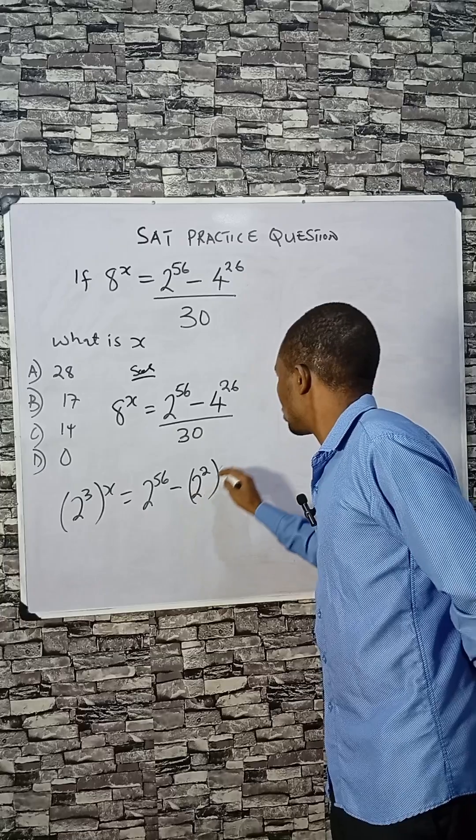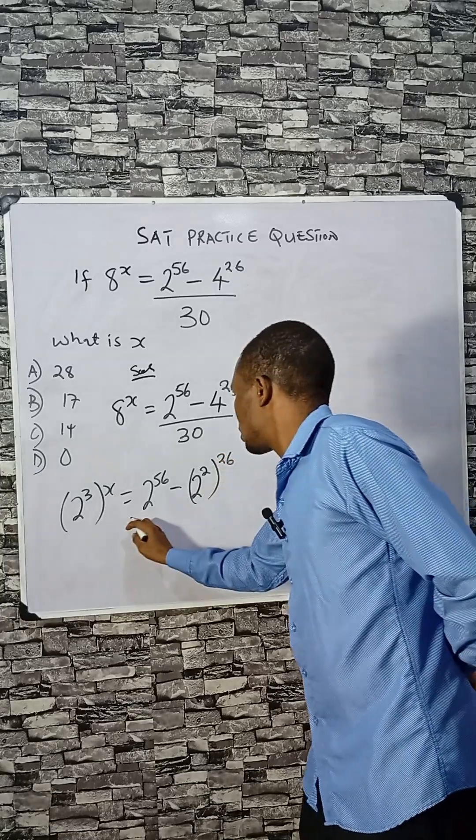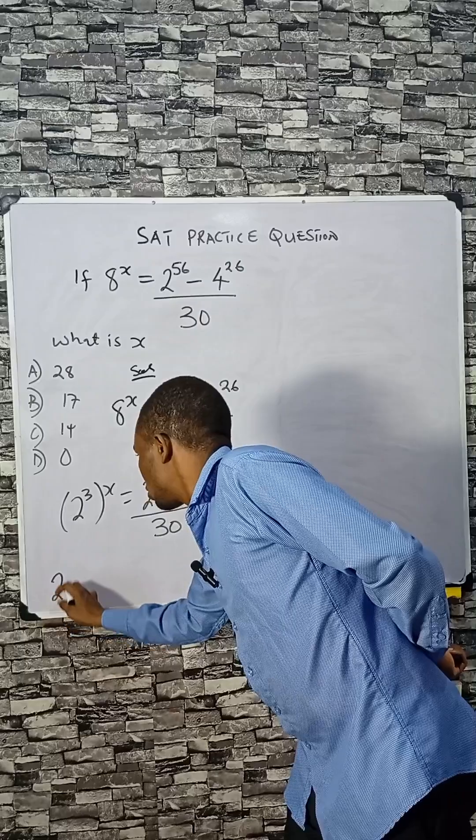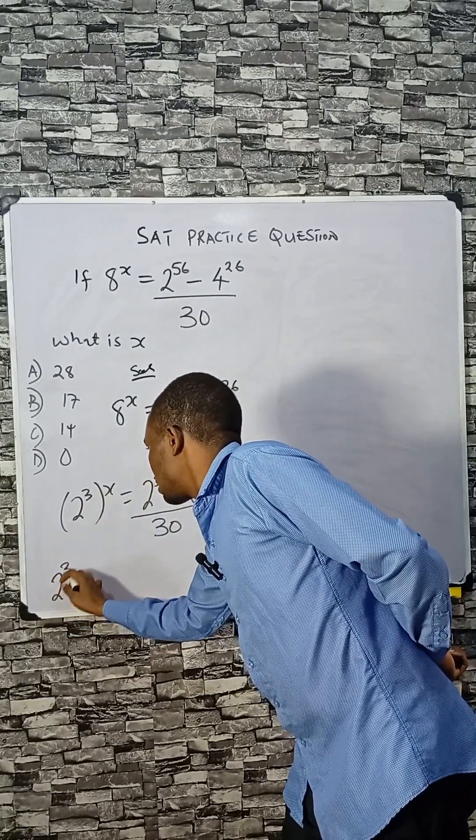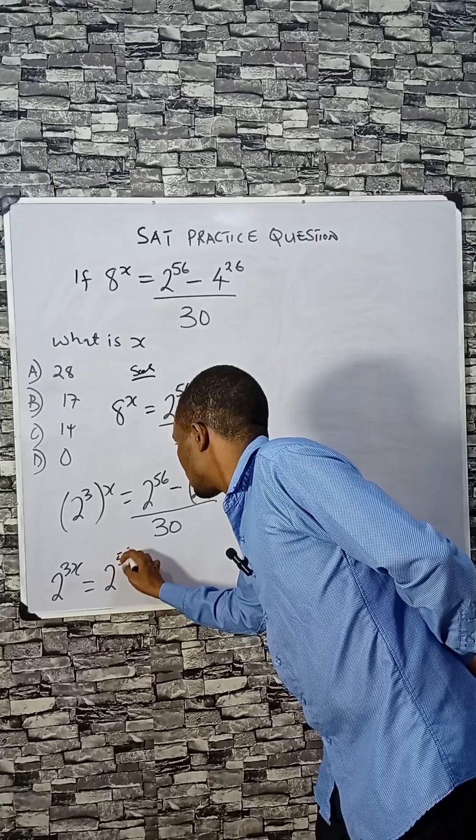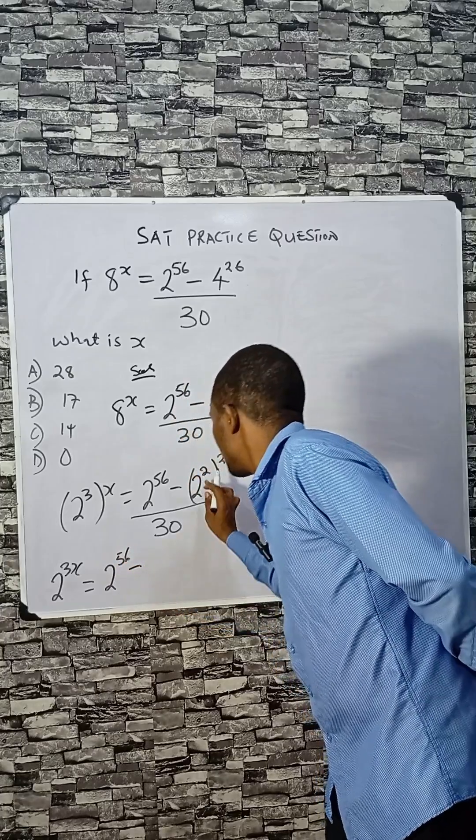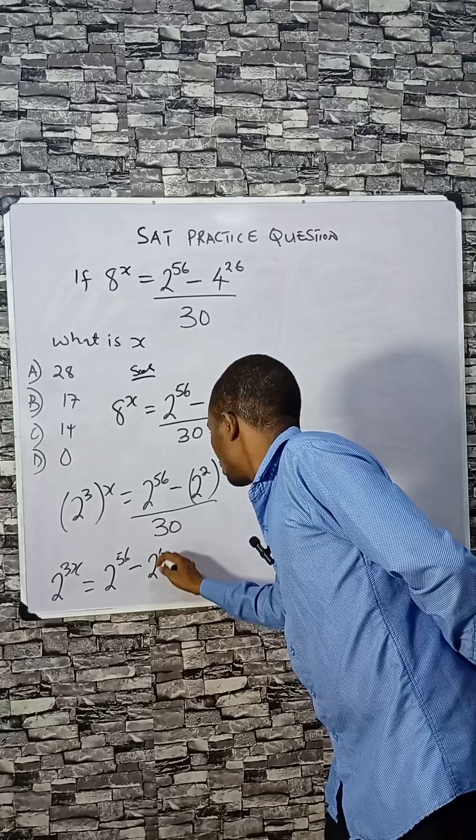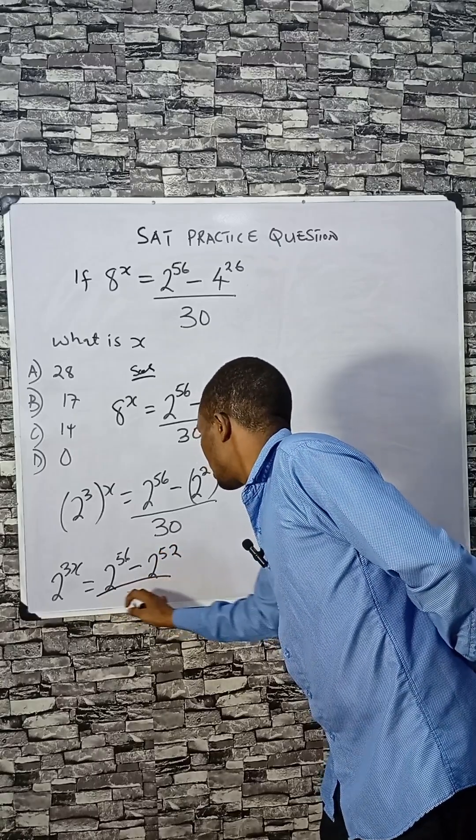...can be raised to power 2, 26 divided by 18, we can do further here to be 2. This time, this will give you 2 raised to 3x equals 256 minus 2 times this will give you 52, then divided by 18.